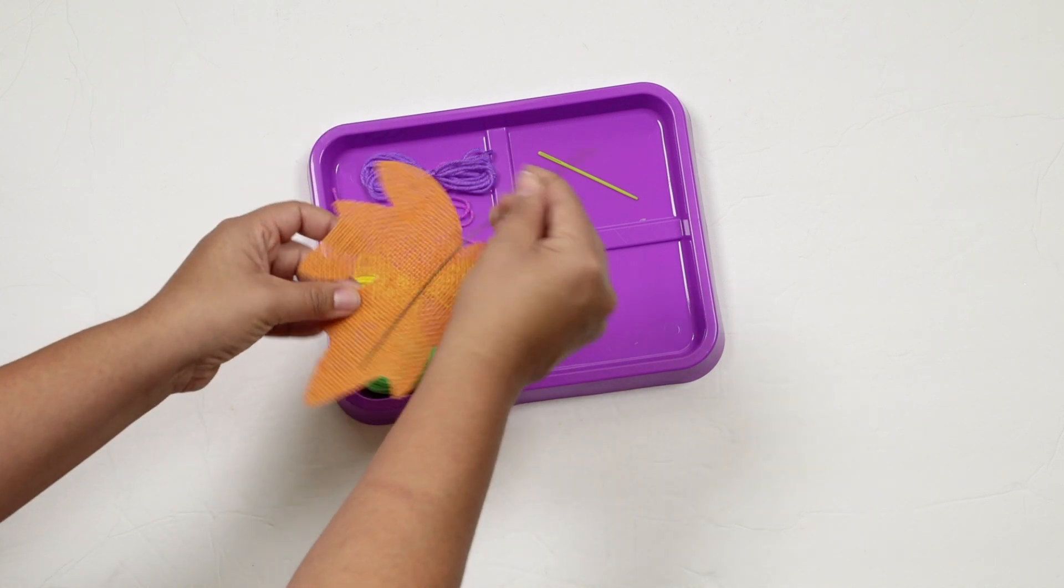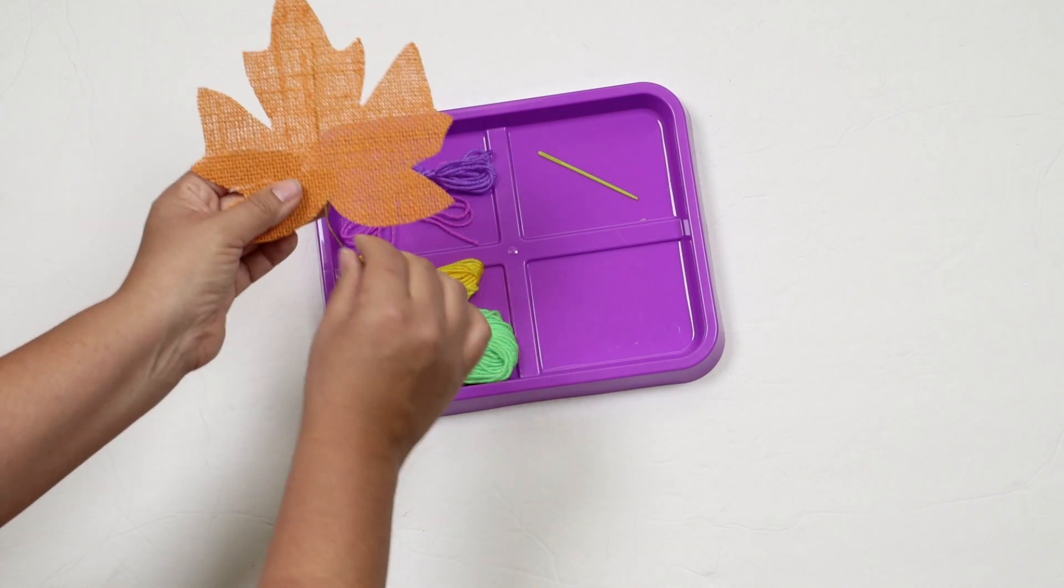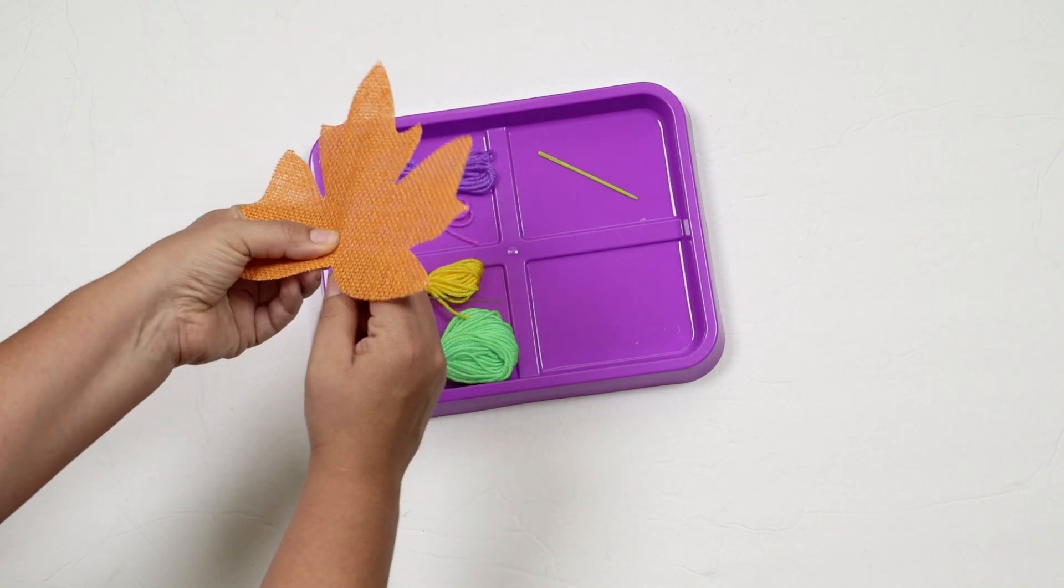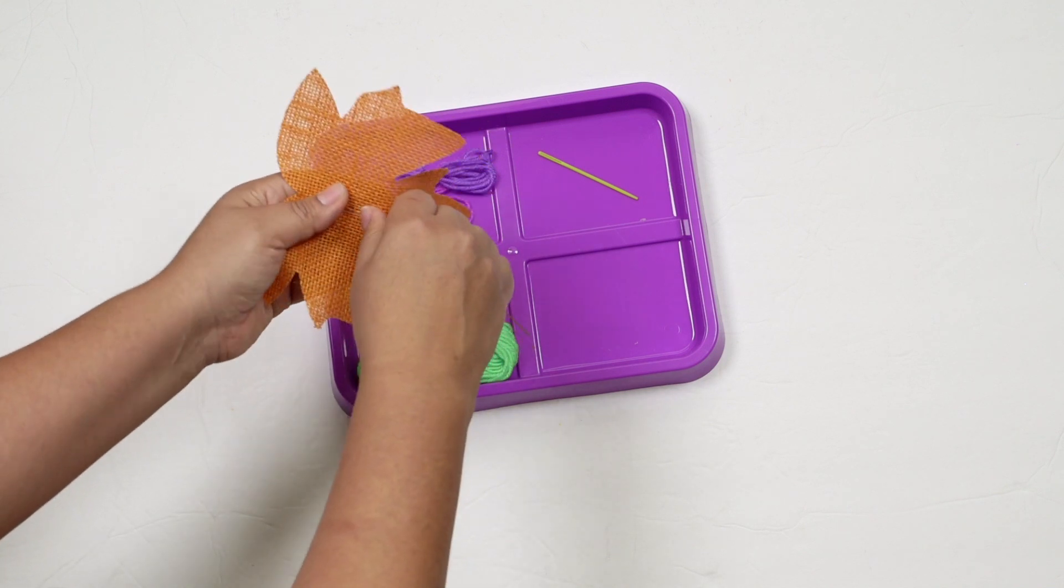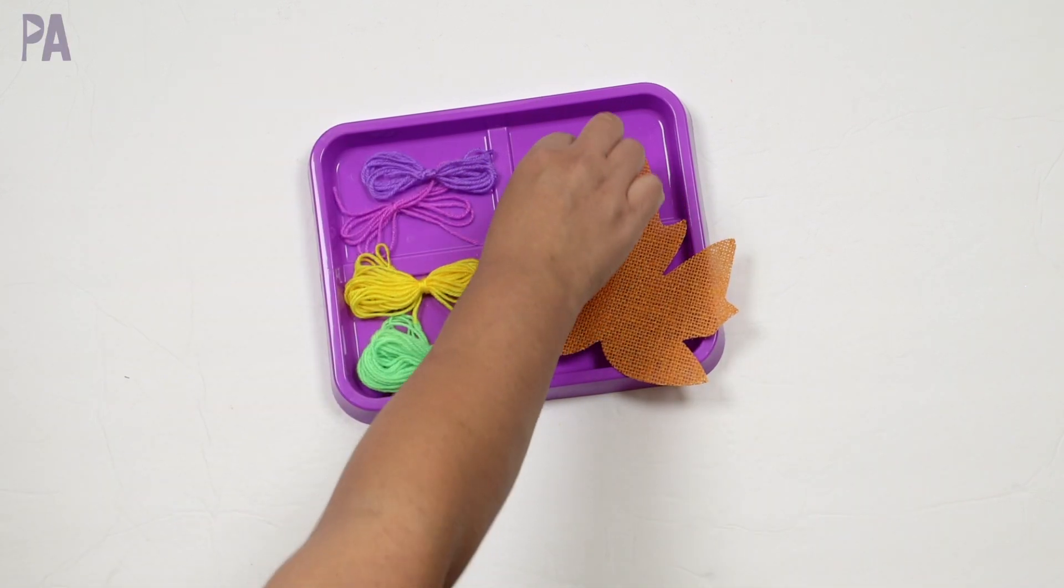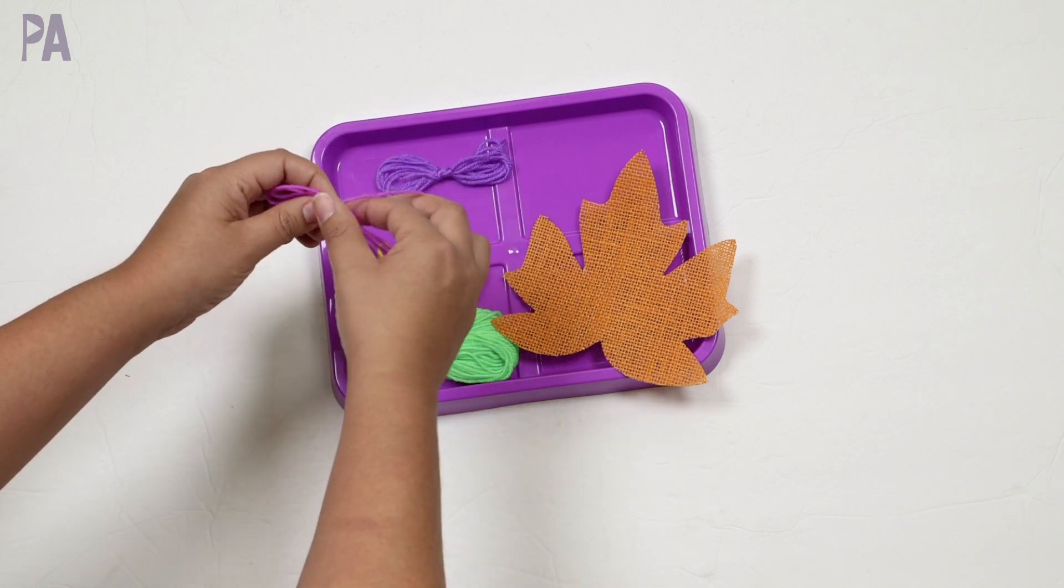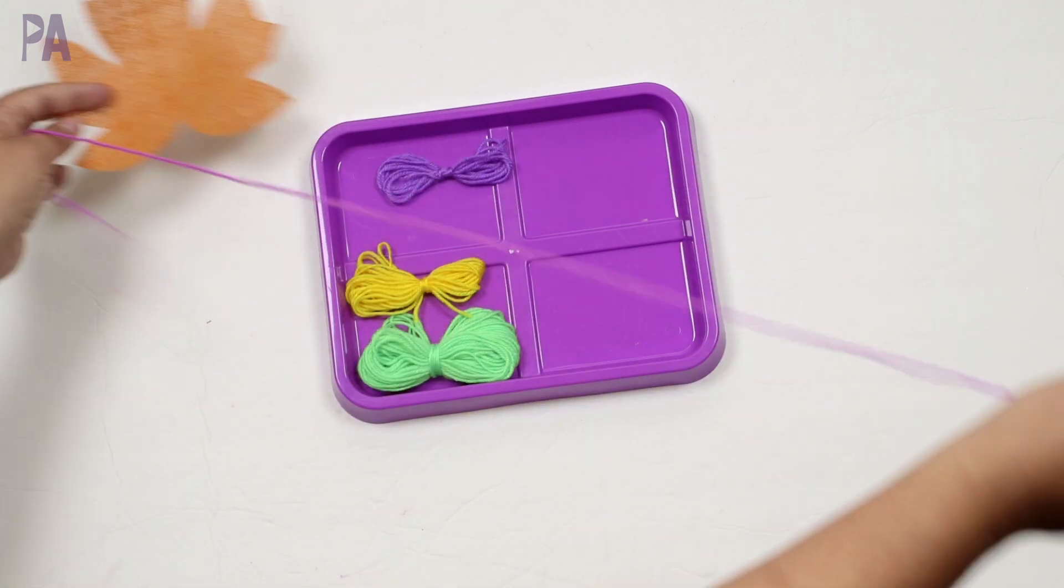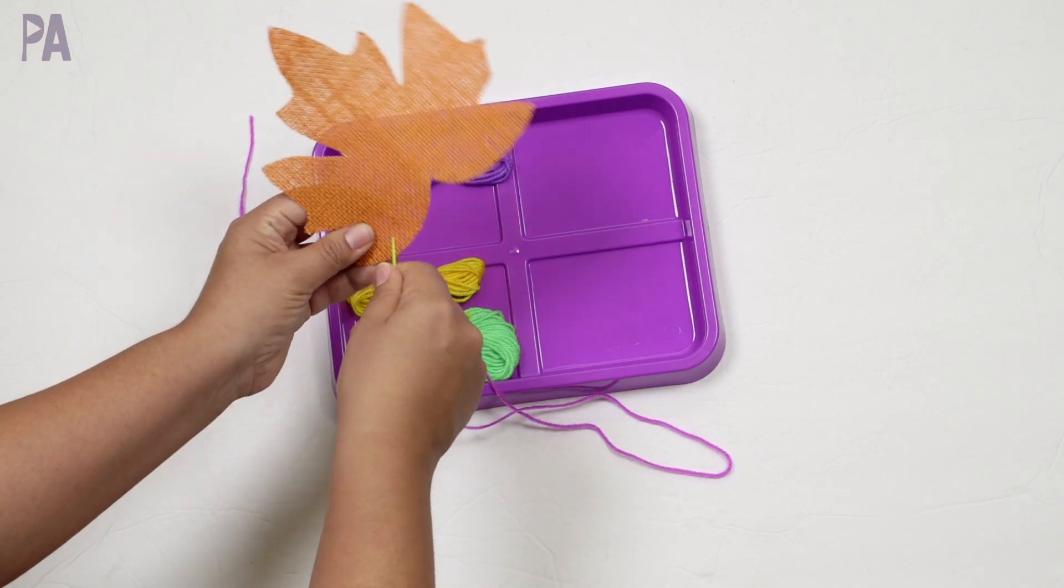Now these leaves do come with a stem that's to put them on wreaths or in different craft projects. But what I would do is cut that part off or even peel it off. It's just glued on there before giving it to your kids like that. Then I would go ahead and pre-thread one of these just because it's a little bit hard to do on your own to get them started. And then what you're going to have is a simple lacing activity using the burlap leaves.